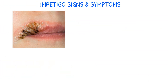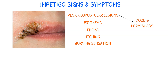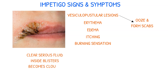Impetigo patients may experience symptoms such as vesiculopustular lesions, which are small blisters filled with fluid that could also be purulent, erythema and edema around the affected area, itching, and a burning sensation. The lesions progress to a stage where they ooze and form scabs. The clear serous fluid inside the blisters becomes cloudy, and the blisters break open, leaving behind honey-colored scabs covering open sores.